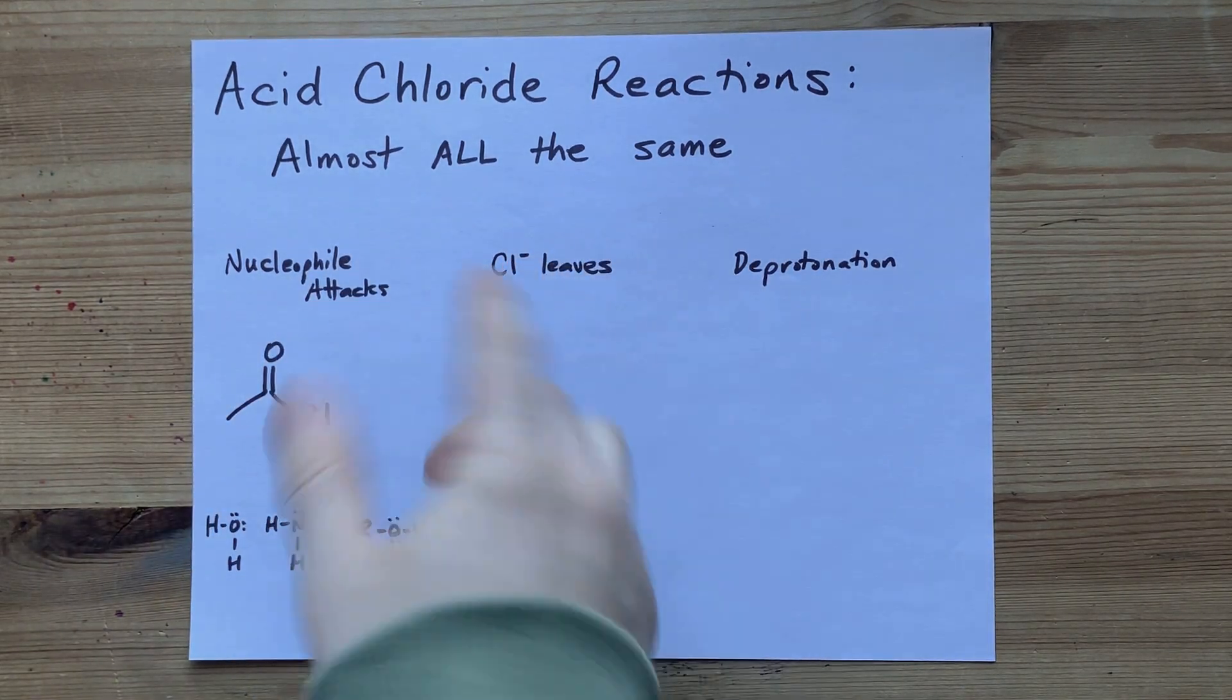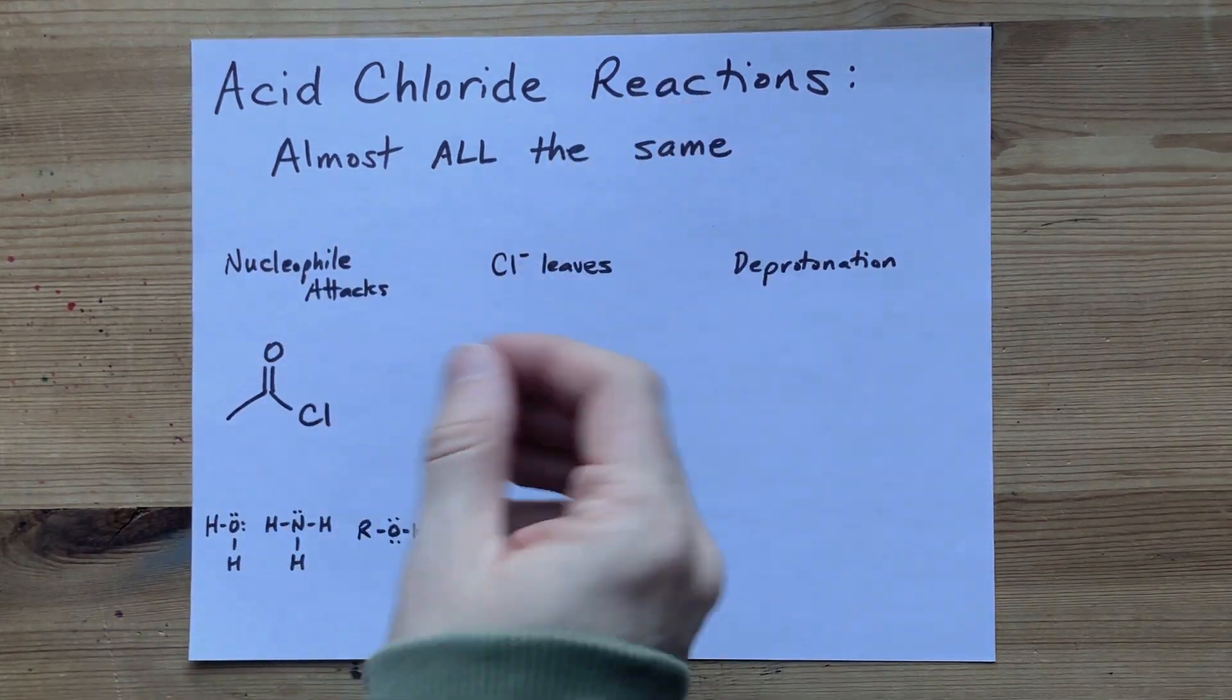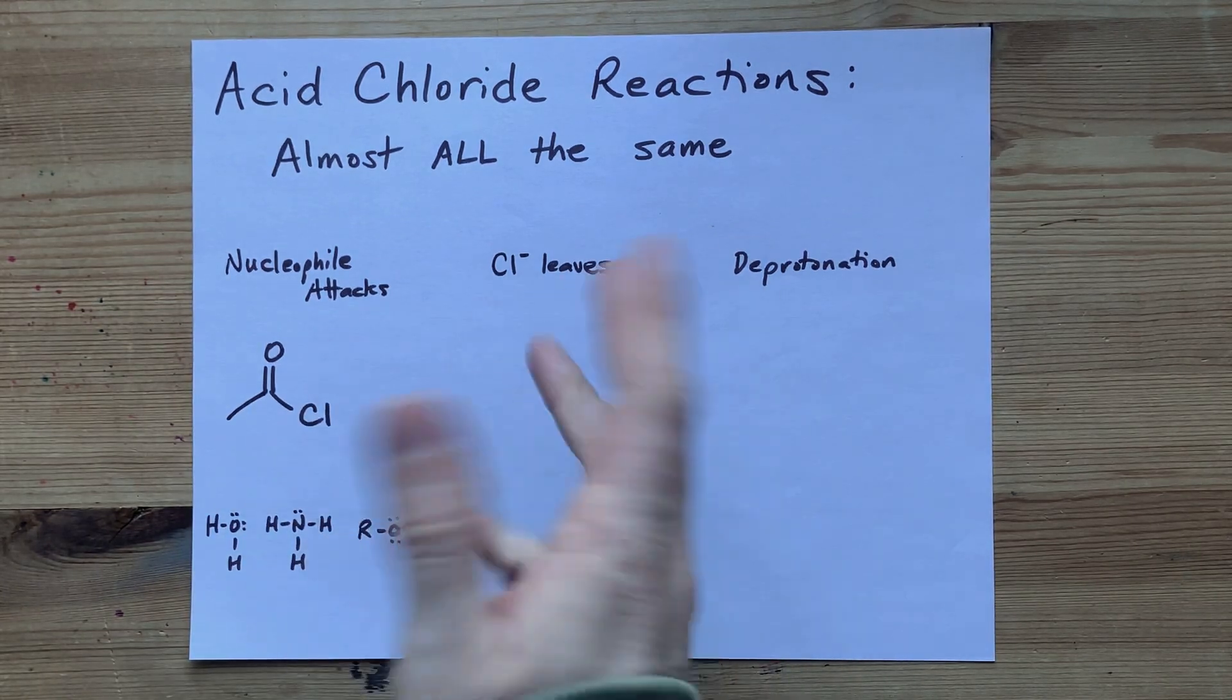Reactions of acid chlorides are basically all the same. I'm going to show you the general mechanism for all of them right here.